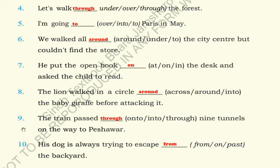Number nine: The train passed through nine tunnels on the way to Peshawar - پشاور کو جاتے ہوئے ٹرین نے نو سرنگوں سے گزرا، through کے ذریعے nine tunnels۔ Number ten: His dog is always trying to escape from the backyard - گھر کی پچھلی جگہ سے کتا ہمیشہ بھاگنے کی کوشش کرتا ہے - to escape from the backyard، backyard سے۔